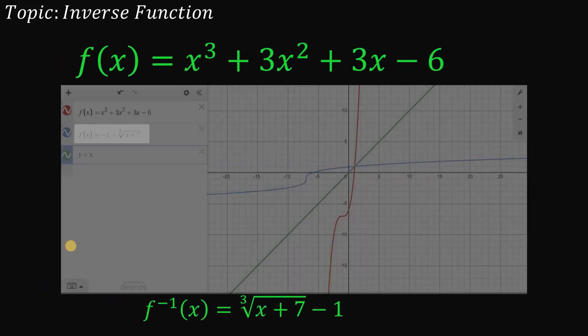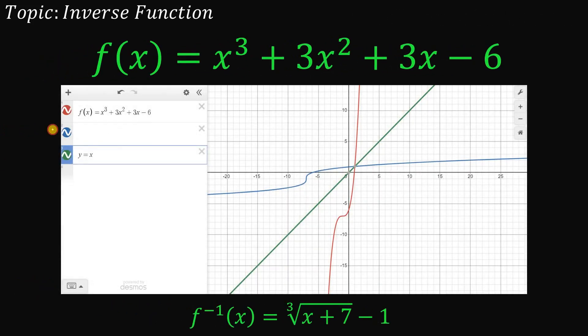Now let's check if this is absolutely correct. Now let's reveal this function, this blue function. And we have here -1 + cube root of x + 7. Or simply, we can interchange this cube root of x + 7 minus 1. This is the same thing as -1 + cube root of x + 7.